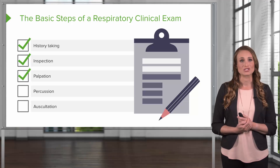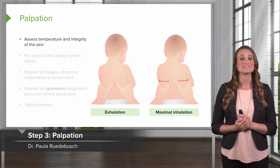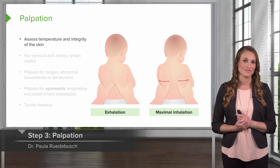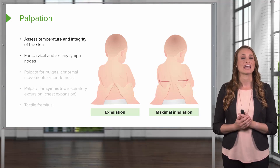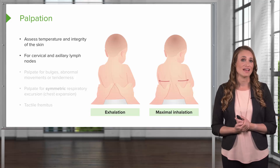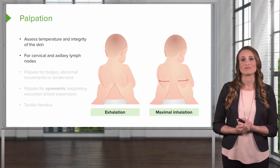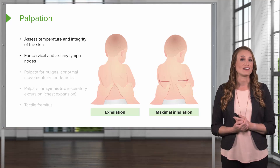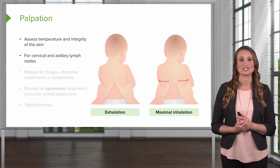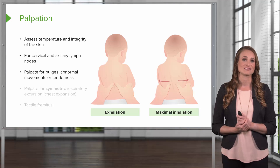The next step is palpation. The clinician is going to assess the temperature and integrity of the skin. They're going to palpate for cervical and axillary lymphadenopathy — meaning palpating the lymph nodes in the neck and in the armpit. These are the chains that filter the chest wall and the lungs, and they can enlarge with certain conditions. You're also going to palpate for bulges, abnormal movements, and tenderness.